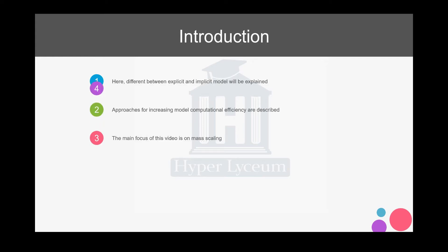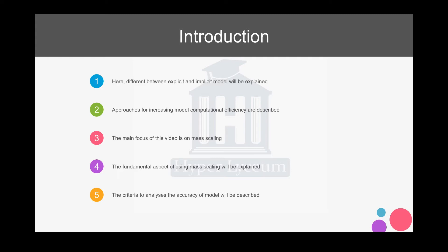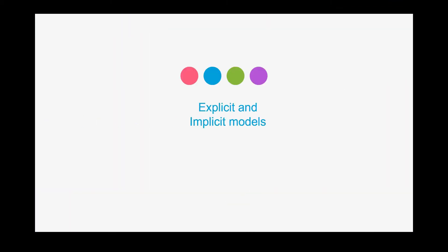As an introduction, first we're going to explain what is the difference between the explicit and the implicit model. After that we're going to talk about approaches to increase computational efficiency. However, the main focus of this video is talking about mass scaling in the explicit model. For a better understanding we're going to talk about the fundamental aspects of mass scaling and the criteria used to analyze model accuracy when using mass scaling.